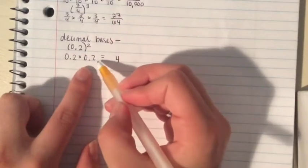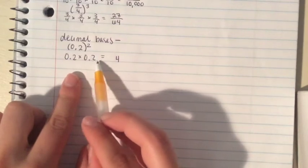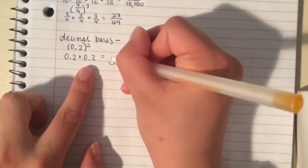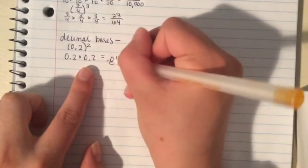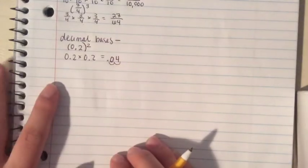and then move over the decimal place afterwards. So both of these have the decimal place moved 1 to the left, so we move the decimal place over 2 places and we get 0.04. Now let's try 0